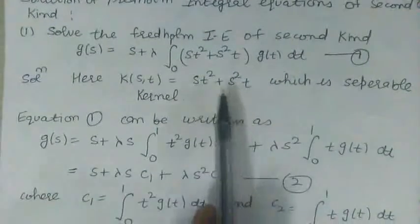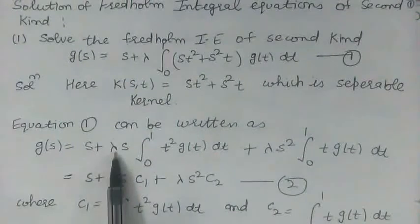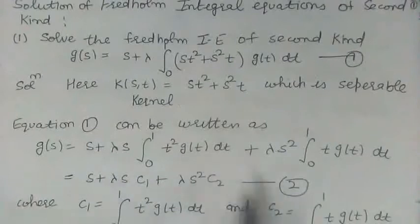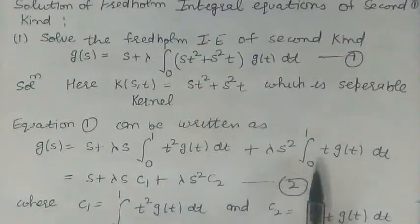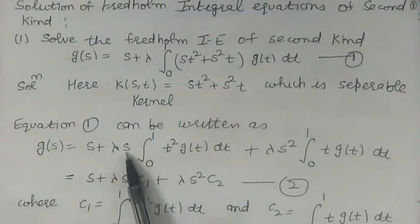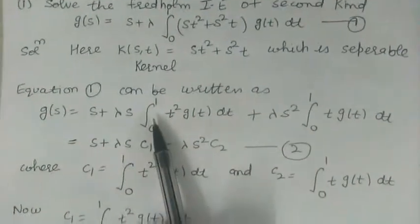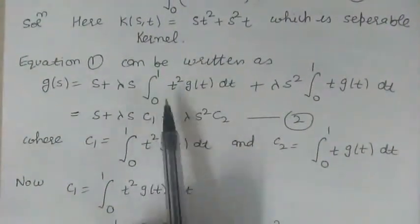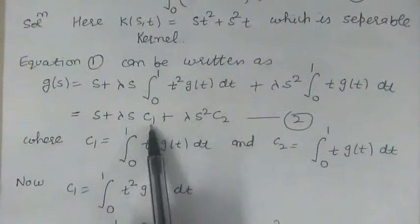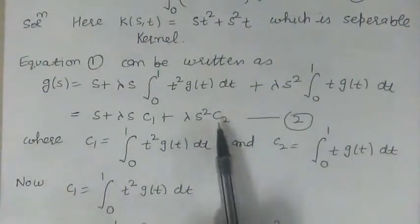Equation 1 can be rewritten as g(s) = s + λs ∫₀¹ t² g(t) dt + λs² ∫₀¹ t g(t) dt. The terms in s have been taken outside the integral. Using the notation: c₁ = ∫₀¹ t² g(t) dt and c₂ = ∫₀¹ t g(t) dt.